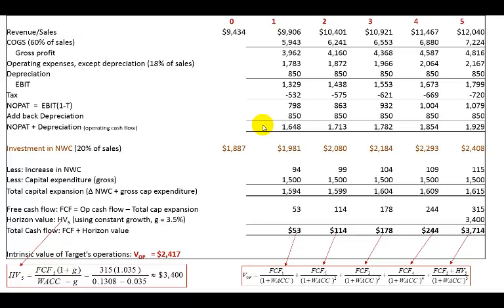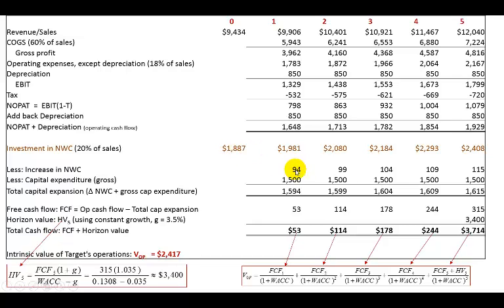Next, we determine the additional investment in net working capital, estimated at 20% of revenues. Taking 20% of projected revenues gives us the NWC levels. The incremental investment in NWC is the difference between adjacent figures — for example, 1,981 minus 1,887 equals 94; 2,080 minus 1,981 equals 99; and so on for the five years.